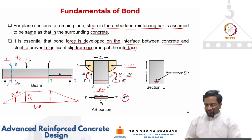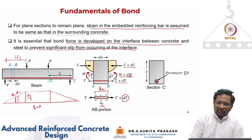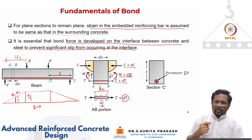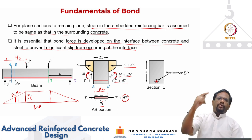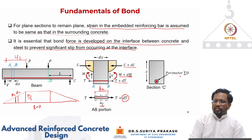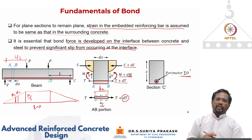Looking at the cross section, this entire force — let us call it uf, which is your bond force — is going to act all around the perimeter of the bar. In this case we have taken only one bar. If you have multiple bars, the bond force or stress will develop on all perimeters. For multiple bars, we look at the summation of perimeter O, where O is the perimeter for one single bar, and we calculate the perimeter for all bars.